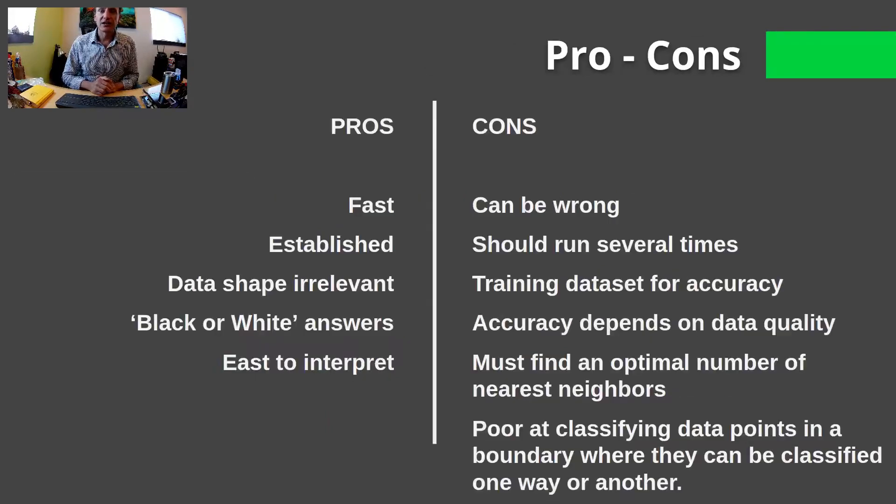So, pros and cons are KNN is incredibly fast. Again, it's very well established, it's been around for a long time. The shape of the data is irrelevant, and it will give you a black and white answer. The KNN classification scheme will tell you this goes with green, or it goes with red, or it goes with blue, or whatever. There is no in-between, and it's easy to interpret the results. The cons of the system, however, is that it can often be wrong, especially in the case of outliers. We should run KNN several times, because the classification will be different each time, slightly, and thus a training data set is really useful for KNN. If you have an example that you're going after, KNN will work towards those examples.